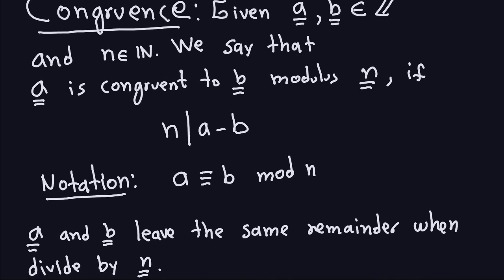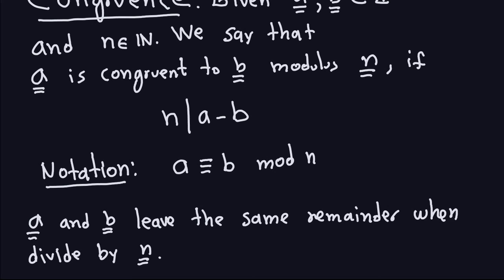What is the meaning of all this? When you write A congruent to B modulus N, it means that A and B leave the same remainder when divided by N. If I take A and divide it by N, that gives some remainder. If I take B and divide it by N, that gives some remainder. If those remainders are exactly the same, then A and B are congruent modulus N.